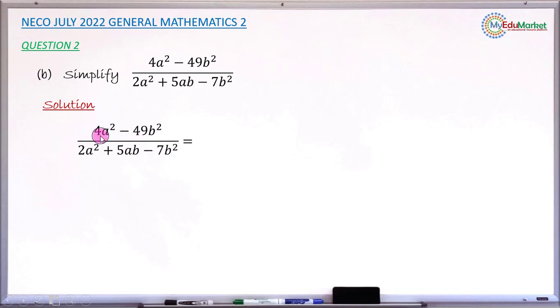Starting with the numerator, this 4 can be written as 2². So 4a² will now be 2²a², which you can take the power 2 outside the bracket. Similarly, 49 can be written as 7². So 49b² will be rewritten as 7²b², which is (7b)². So the numerator will now be, instead of 4a², you now have (2a)² minus (7b)².